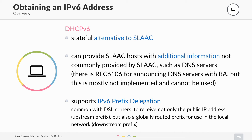DHCPv6 can also be used for IPv6 prefix delegation, which is used with DSL routers if your provider supports it and you get your own network behind your router. This applies in cases where you don't only have your public IP address, but also have your own network to be routed to the inside.